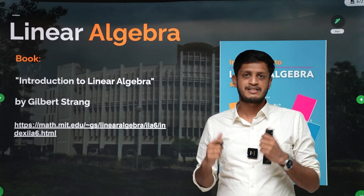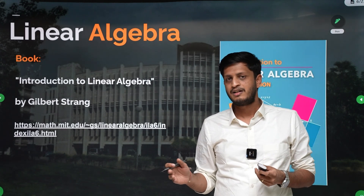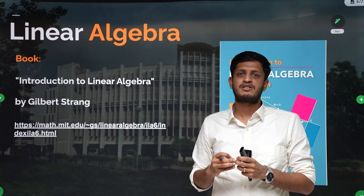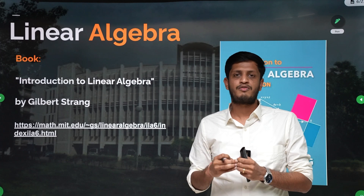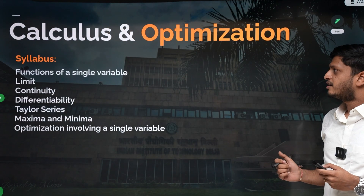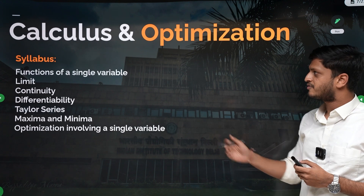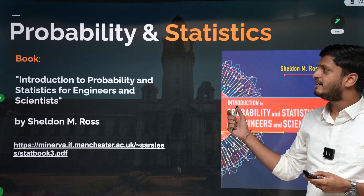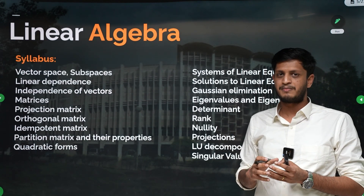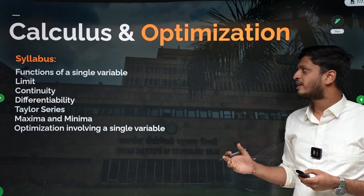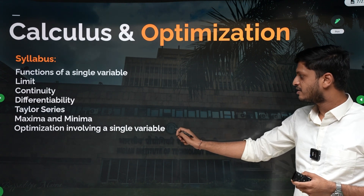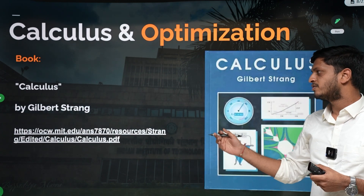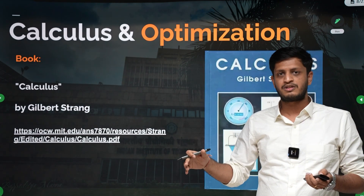We will be referring to the Gilbert Strang textbook for our lecture classes as well. Watch the lecture videos first and only refer to the textbook for topics you find difficult or want more practice on. For calculus and optimization, the syllabus is mostly the same as GATE CS. In GATE DA, optimization involving a single variable is an extra topic, but that is also covered in the Gilbert Strang book.